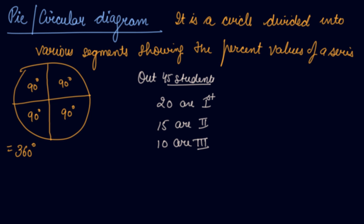In that case, you can convert it into degree form by 20 divided by 45 into 360 degrees. Then 15 divided by 45 into 360 degrees. Then 10 divided by 45 into 360 degrees.